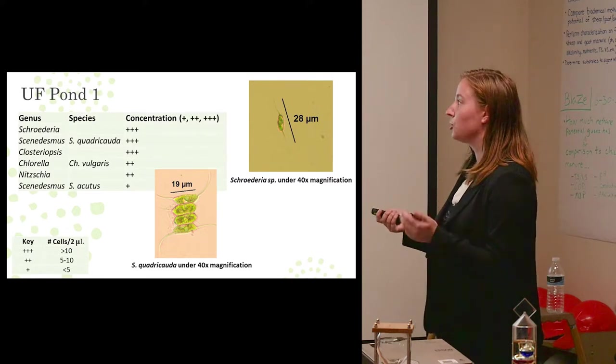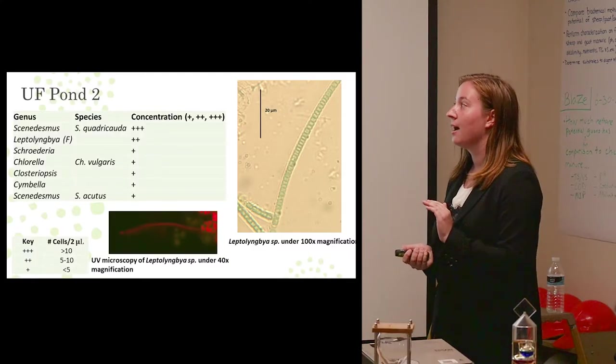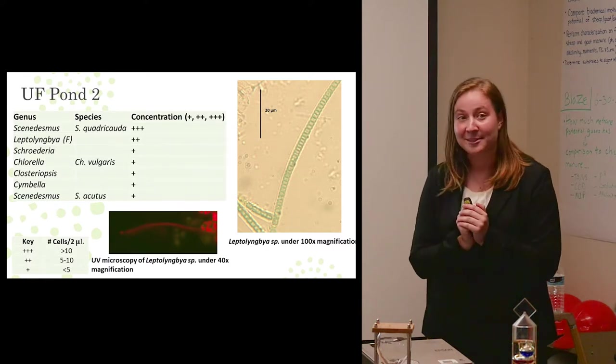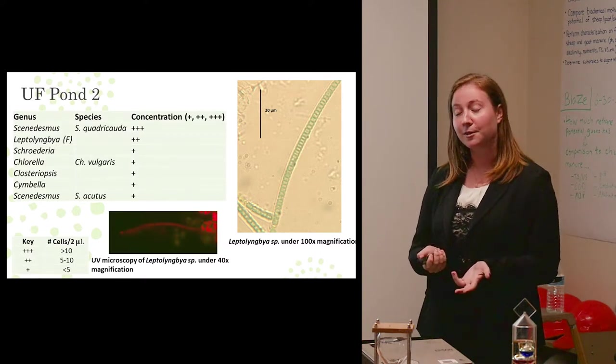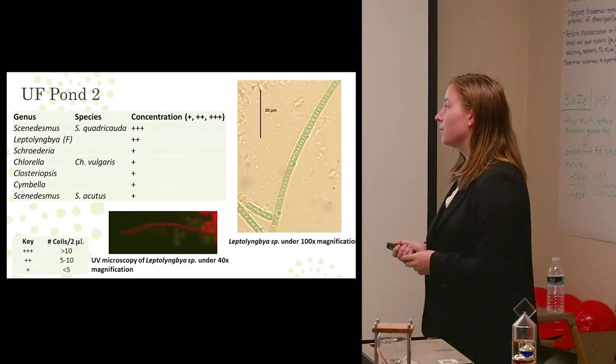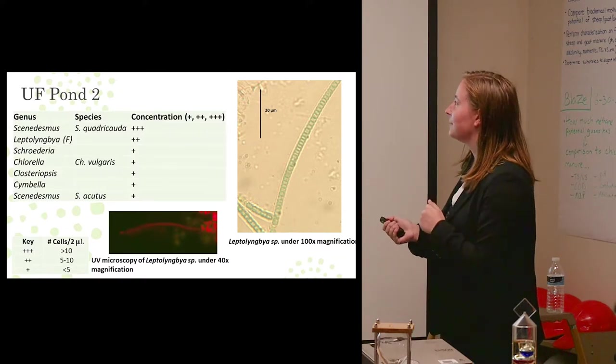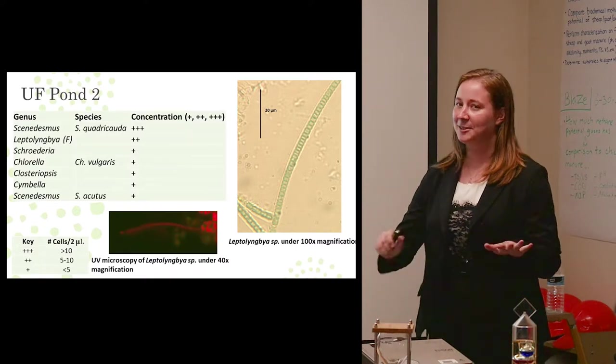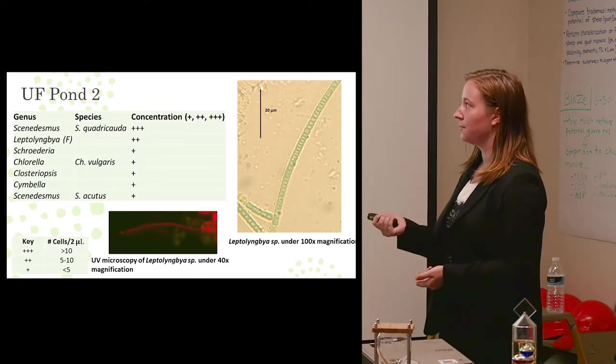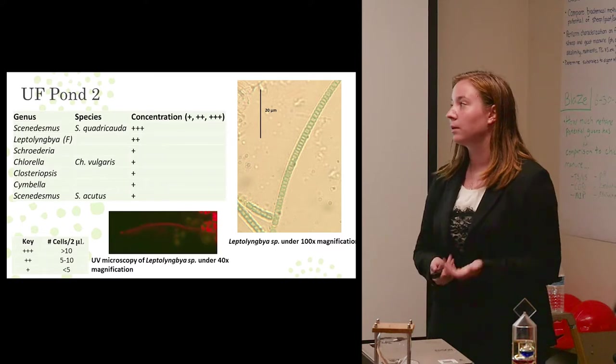So now moving along to Pond 2, we also have that Scenedesmus in very high concentrations. However, below that we have this F here, stands for filamentous. I found filamentous algae in our ponds. And the way I was able to identify and confirm that is I used UV light to show that this wasn't simply debris. There is actual chlorophyll. That's what that red line is. And from there, I was able to identify it as Leptolyngbya. I'm not particularly sure if that's the correct pronunciation, but this presence of filamentous algae wasn't nearly as concentrated as the Scenedesmus. However, it was still very prevalent within the ponds.